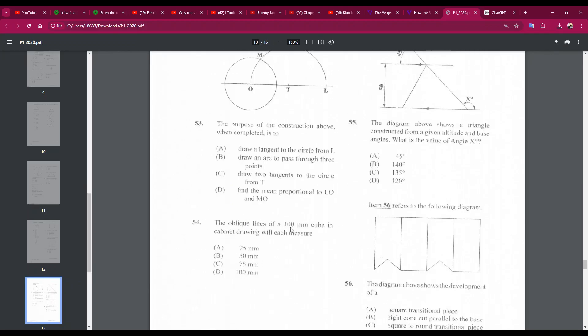Number 54: the oblique lines of a 100-millimeter cube in cabinet drawing will measure. So when drawing cabinet oblique, receding lines are drawn at half length. So it's a cube. The receding lines are 100 millimeters. So the answer is B, 50.